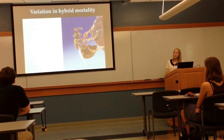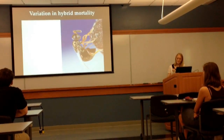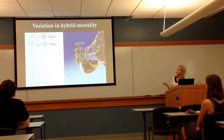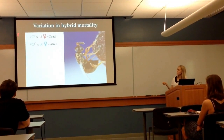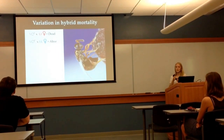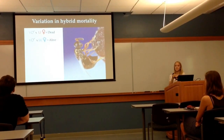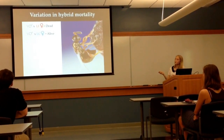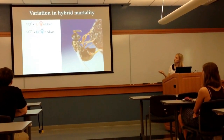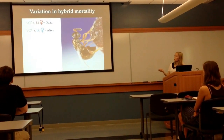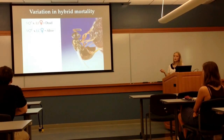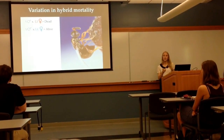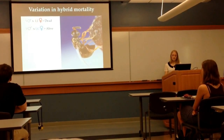We also know there is variation in this hypermortality. When we cross vitripennis males with LI females — standing for longicornis incompatible — all their hybrid daughters die. But when we cross vitripennis males with LC females — standing for longicornis compatible — all their hybrid daughters live.